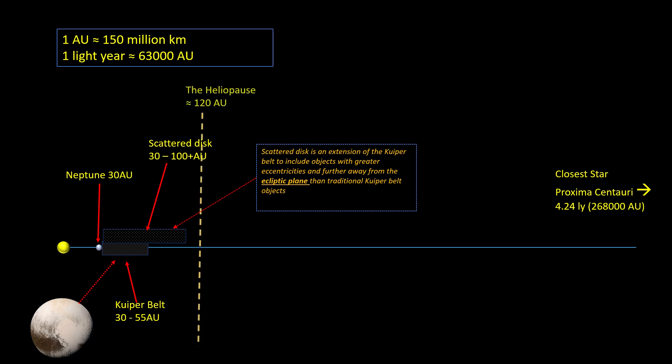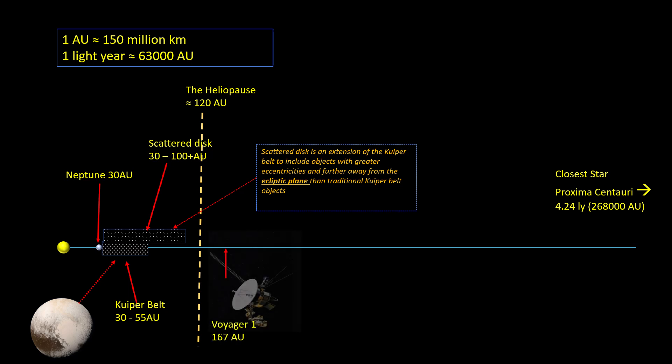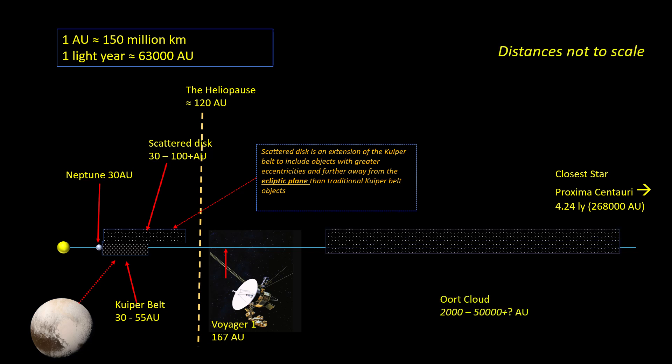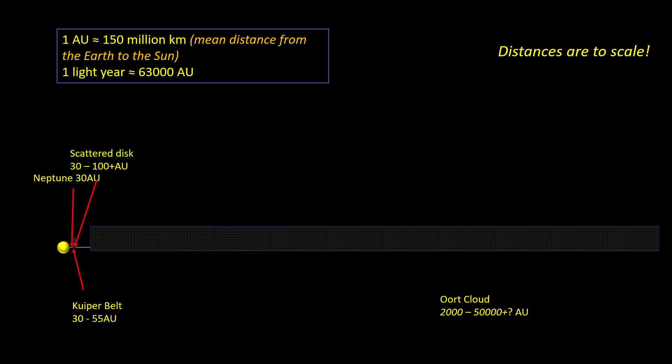The heliopause is the boundary between the solar system and the interstellar medium. Beyond the heliopause is the Voyager 1 spacecraft, travelling away from the solar system at the rate of 3.57 AU per year. In hundreds of years' time, it will cross into the Oort cloud, but by this time its transmitters will no longer be working, so we won't be able to know what it finds. In this diagram the distances aren't to scale — if we redraw it with distances to scale, you can see it looks very different indeed.